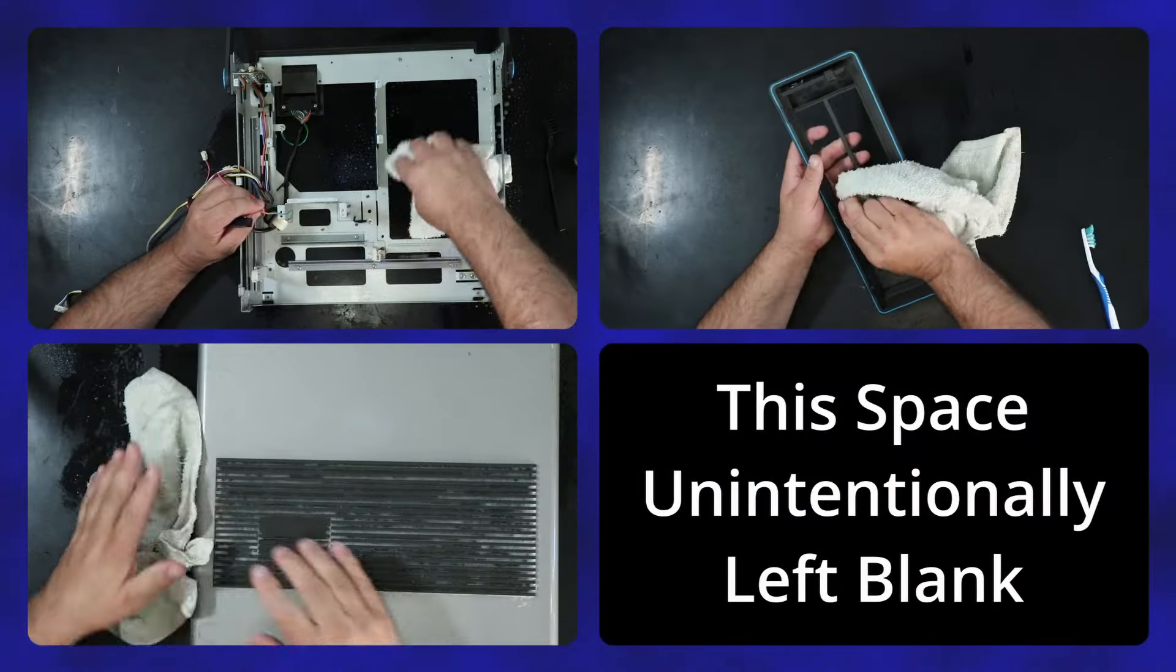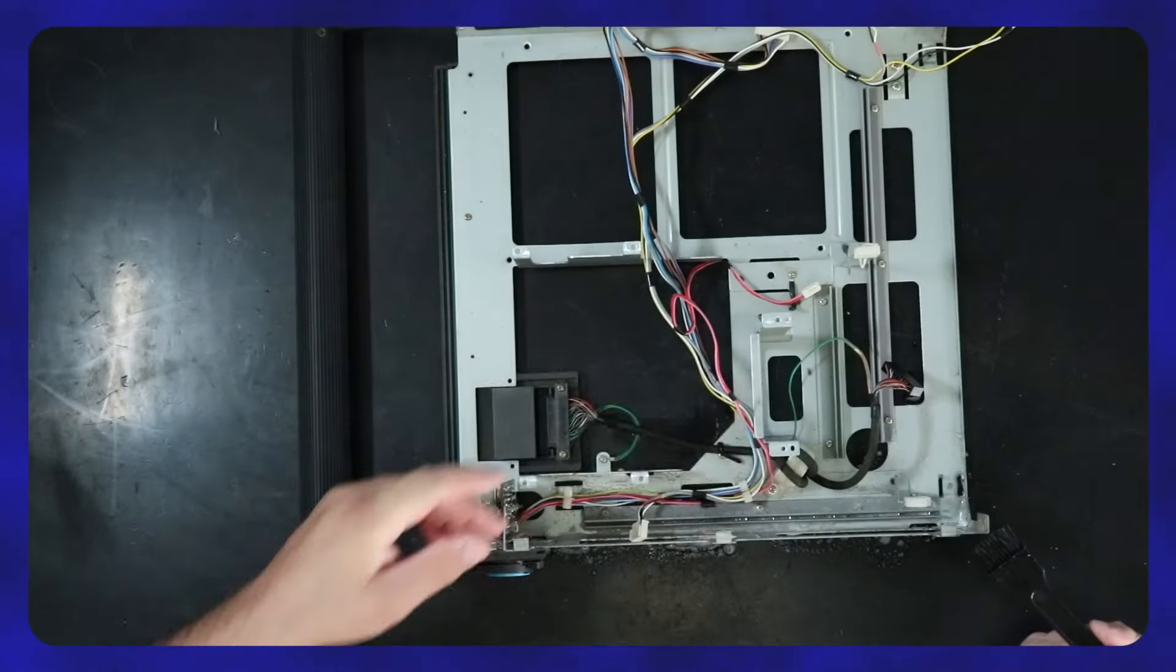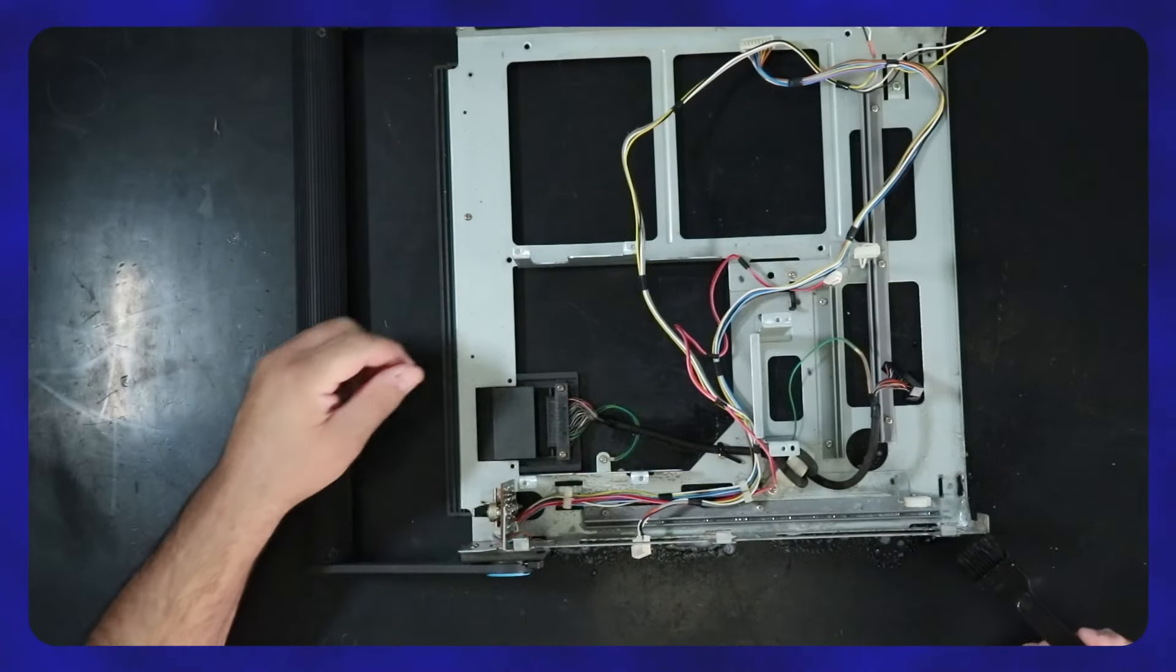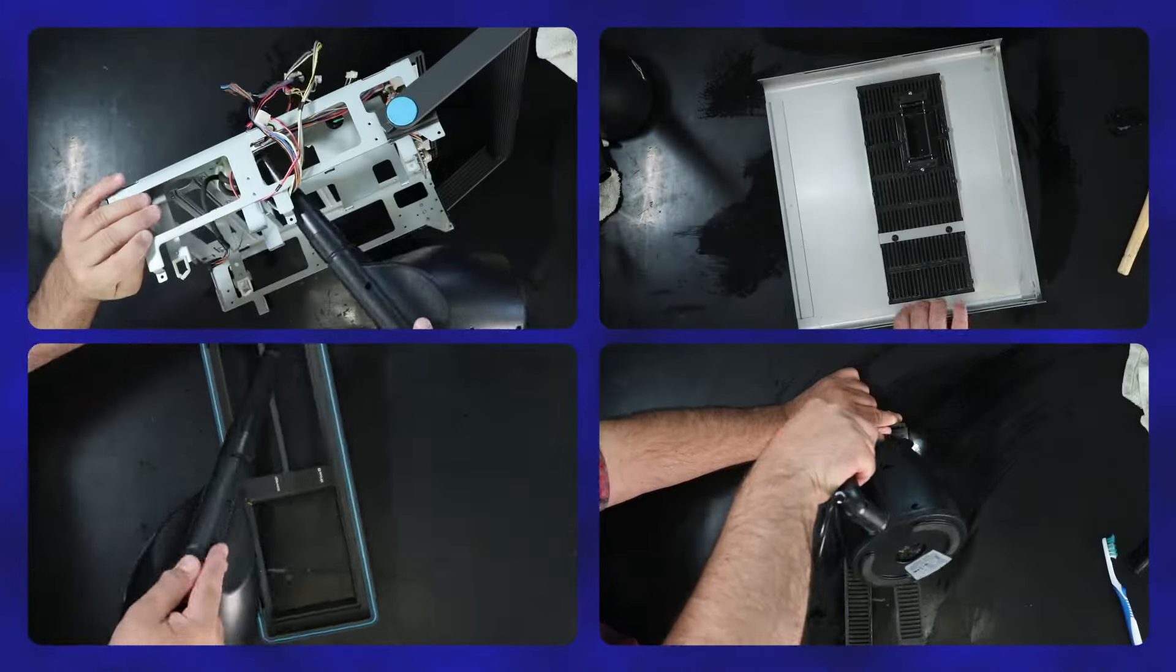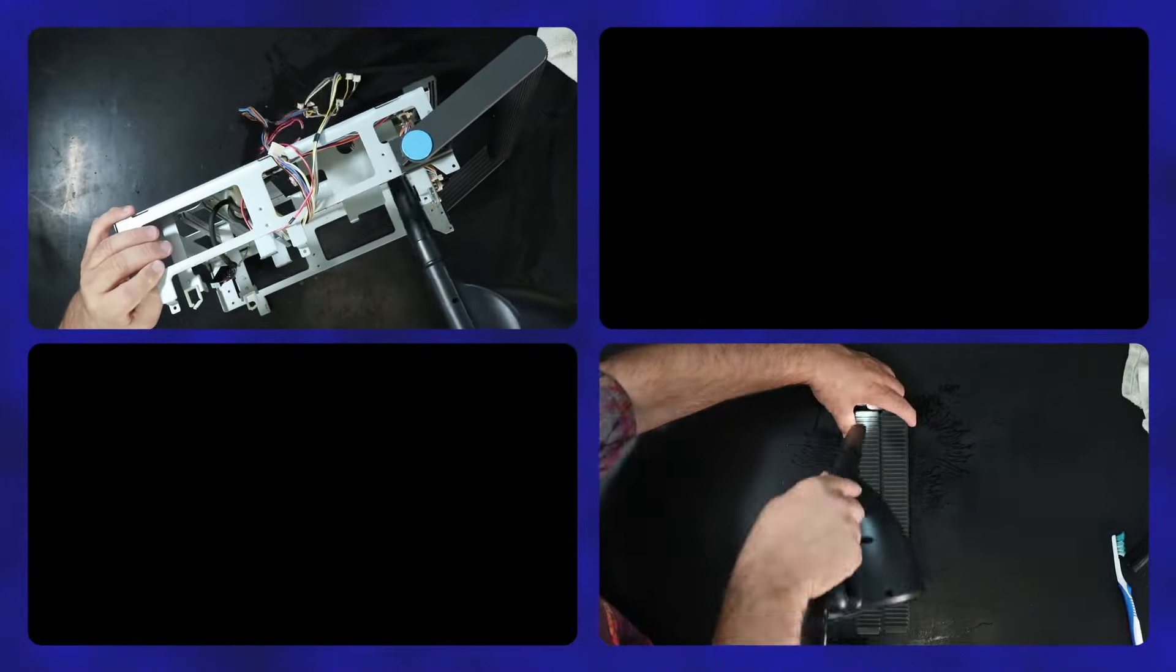Once a part is clean, it gets wiped down with the cloth and inspected. When I'm happy with the result, the part is rinsed in warm water, except in cases where the item is not water tolerant, like the frame with all the harness wires and the control board. Each part is then blown off to remove the bulk of the water and then allowed to dry in the warm summer sun.